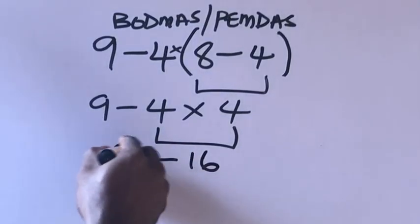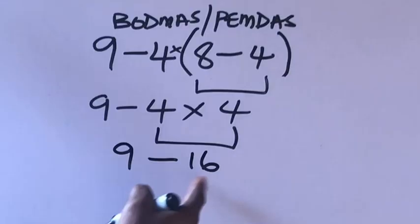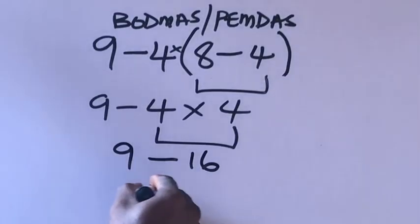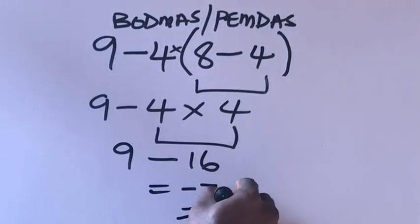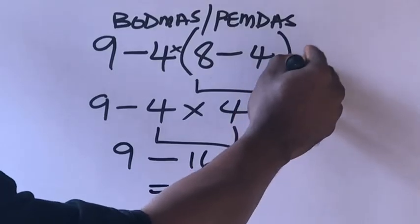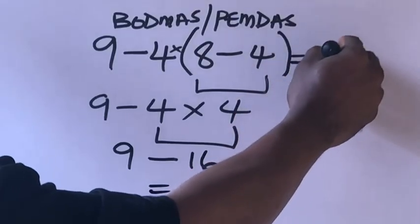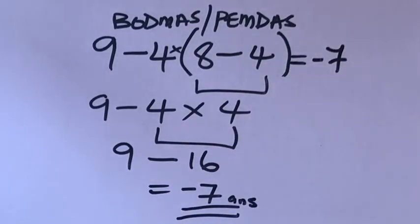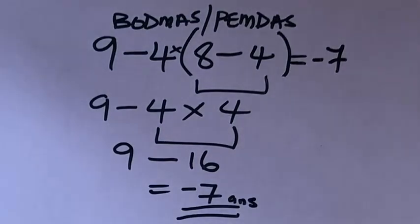Put this minus 9 here. 9 minus 16 will give us minus 7. That is our final answer. Our final answer is minus 7. Thank you.